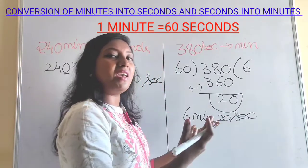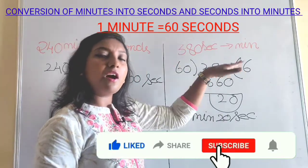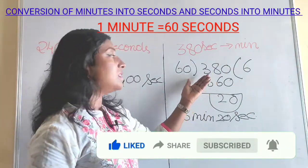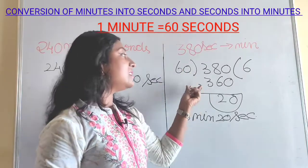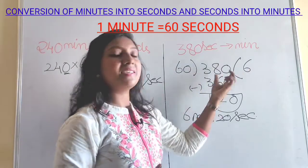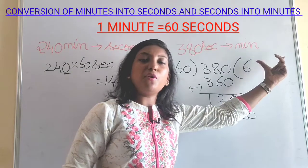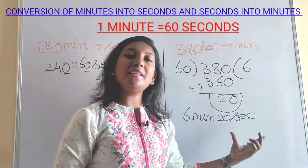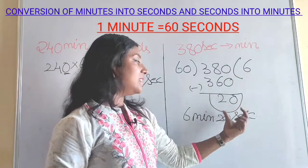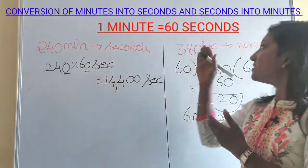In the same way, you can do it using the cancellation method. When converting seconds into minutes, divide by 60 because 1 minute equals 60 seconds. Take 380 divided by 60: 6 times 60 is 360, giving a remainder of 20. The quotient is your minutes and the remainder is your seconds — so 6 minutes and 20 seconds. That is how we convert minutes into seconds and seconds into minutes.